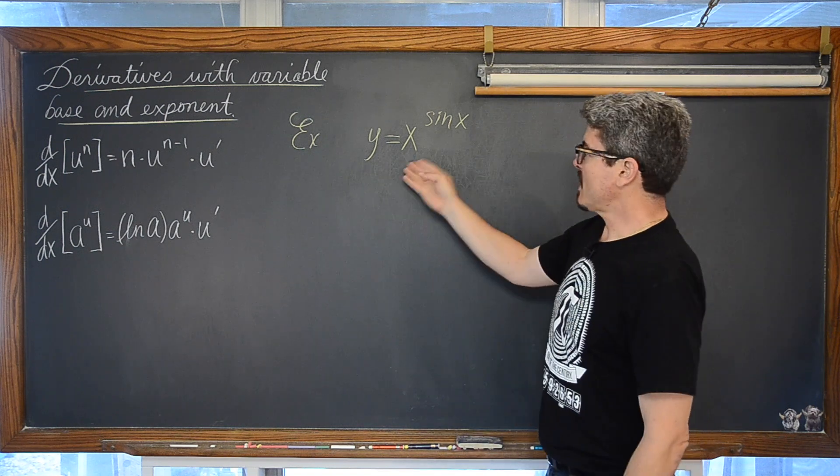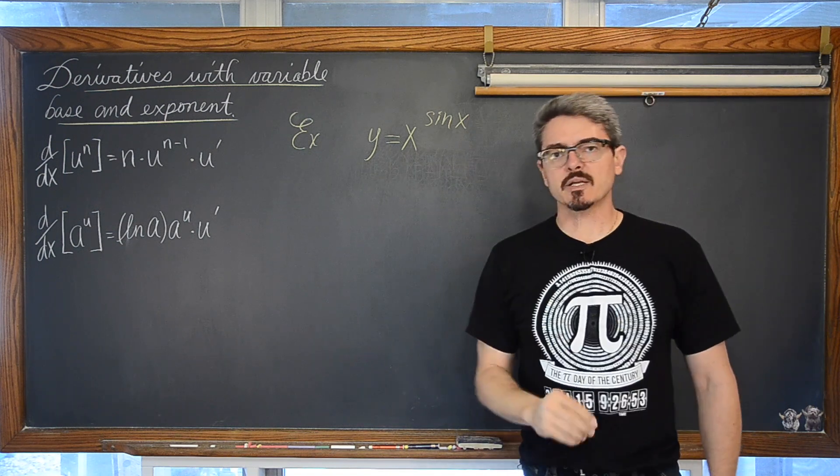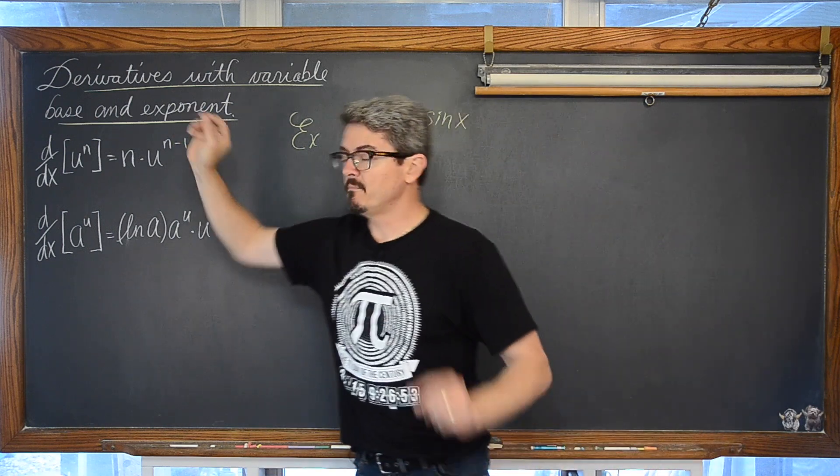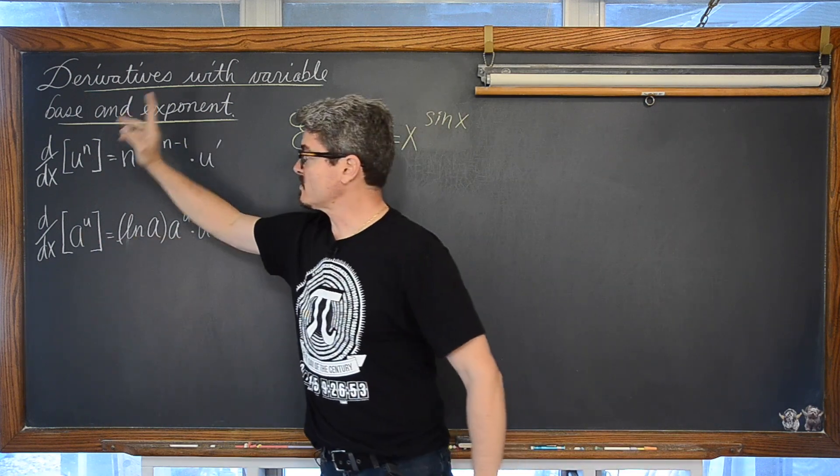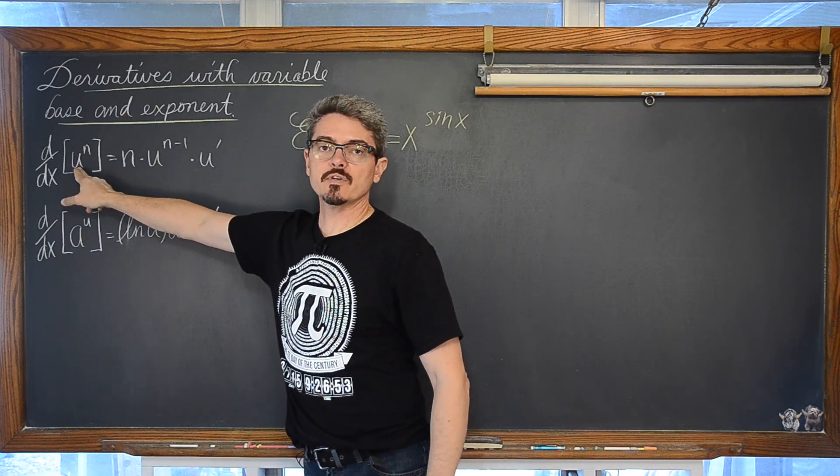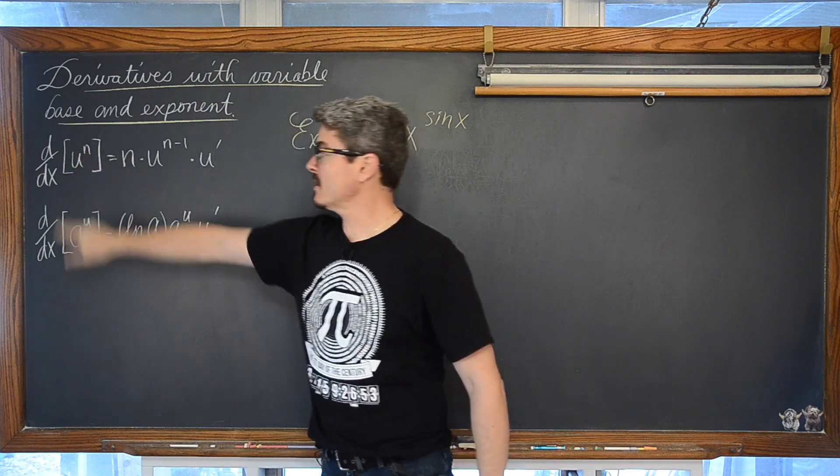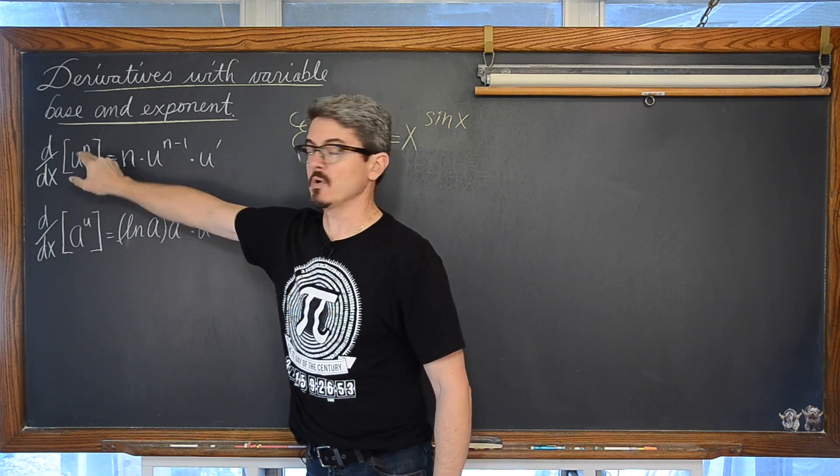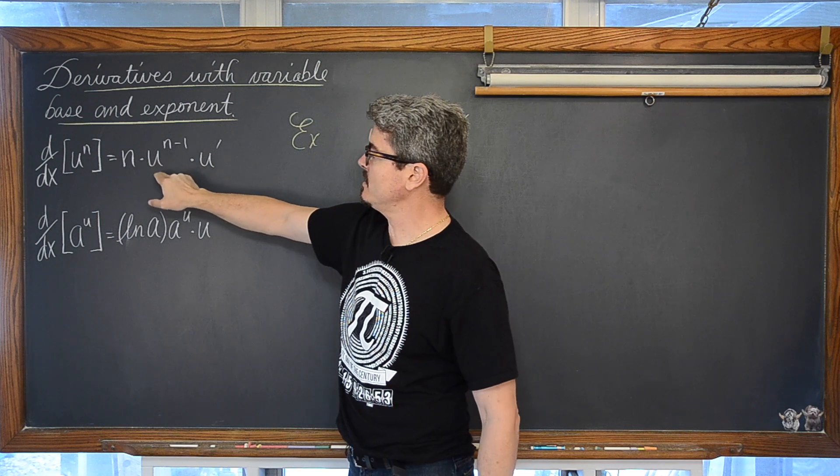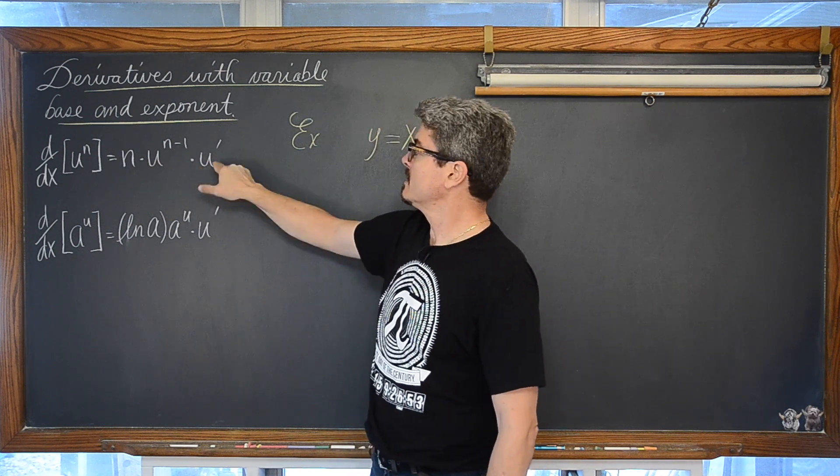If you have not seen one of these problems that have a variable base and a variable exponent, basically you are going to have to figure it out because we have a rule which is the derivative of u raised to the n power, a variable base and a fixed exponent, is equal to n times u to the n minus 1 power times u prime.